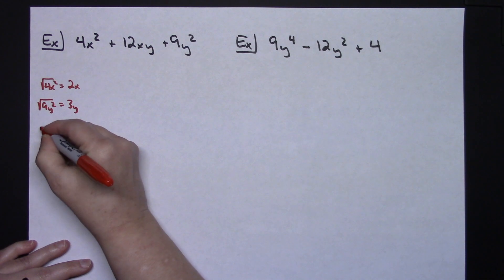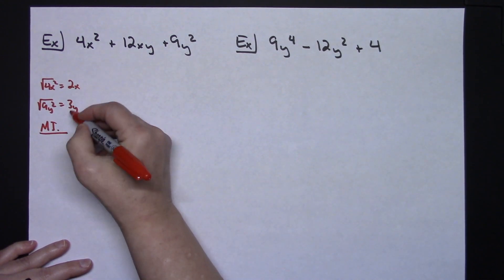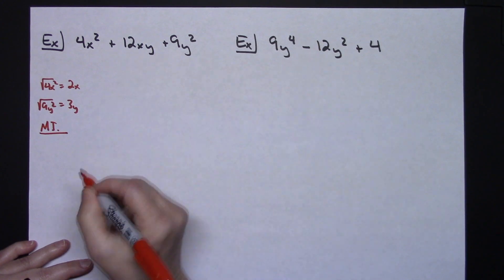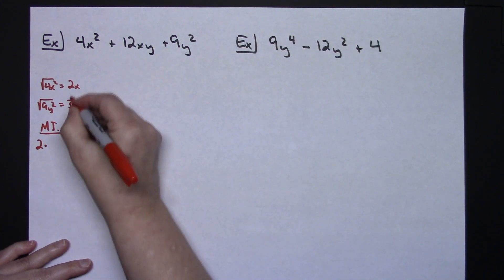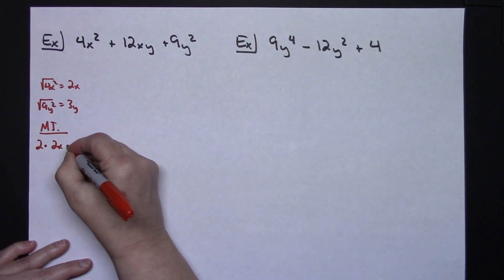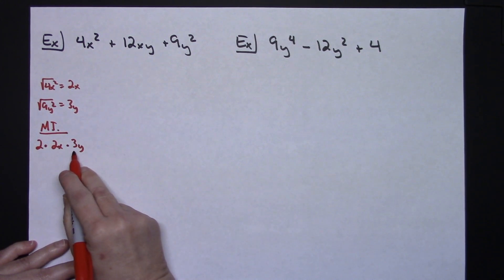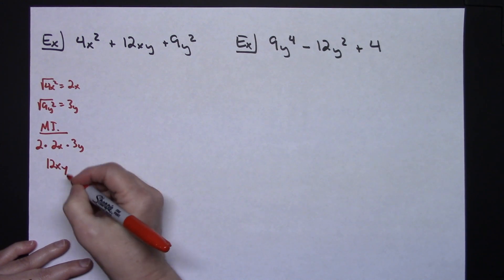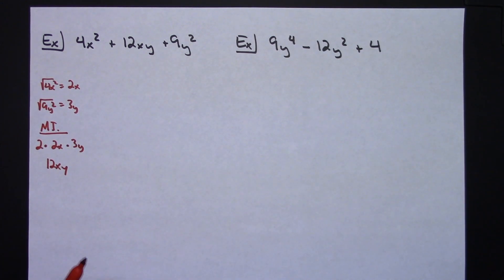And then for my middle term check, can I take each of these and multiply them by 2 and get that middle term? So it's going to give me a 12xy. So it checks, I get that middle term.